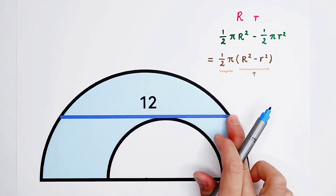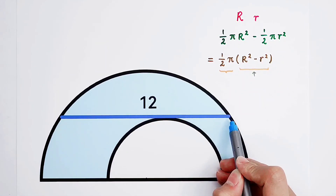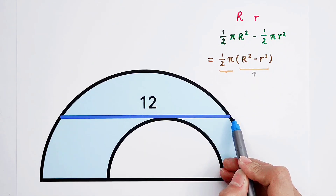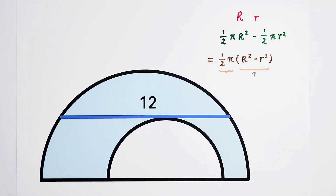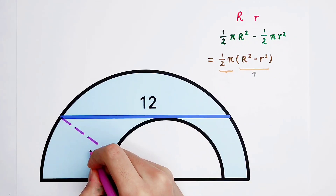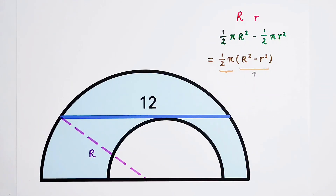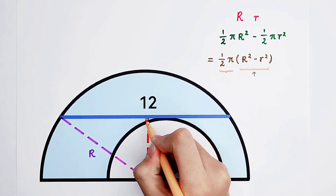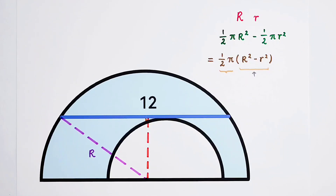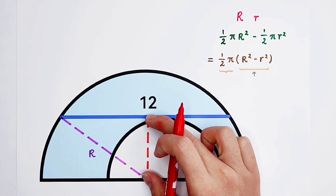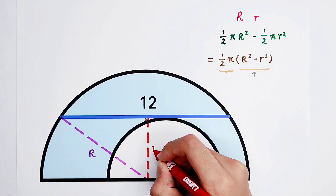A chord has two endpoints, and these two endpoints are on the circle. We have two points here. I prefer this one. Connect our center to this point — this radius is capital R. Then we should find capital R squared minus small r squared. Construct the perpendicular from our center to the chord, so here is actually a right angle. This piece measures the small r.